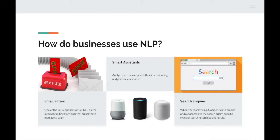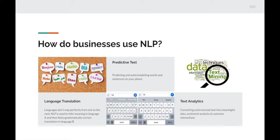Here are three more examples of how NLP is used by businesses. First is language translation — languages don't map perfectly from one to another; there are different words, sentence structures, and grammar rules. NLP infers meaning in language A and finds a grammatically correct translation in language B, and in the last few years translations have gotten a lot better. Next up is predictive text — predicting and auto-completing words and sentences on your phone by analyzing what other people have written.